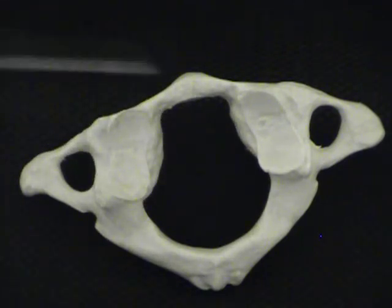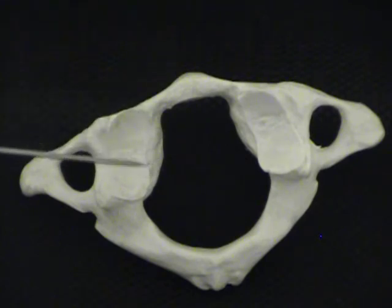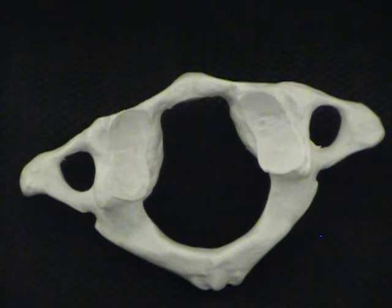This is where the condyles of the occiput on the skull are going to ride, and then underneath, they're going to ride on C2, or the second cervical vertebra.